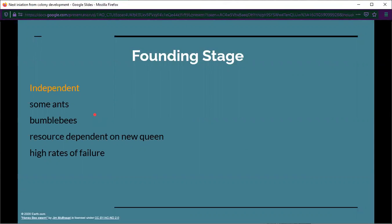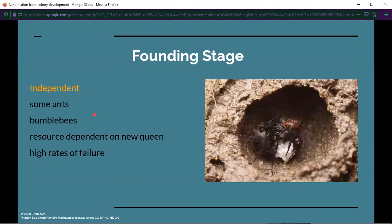There's different types of founding: swarming and independent founding. Here we're just going to talk about independent founding. Independent founding is done by some ants, bumblebees, wasps, and some other bee species, and it is quite difficult.